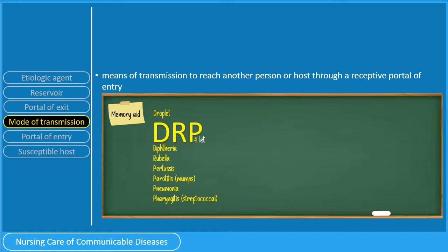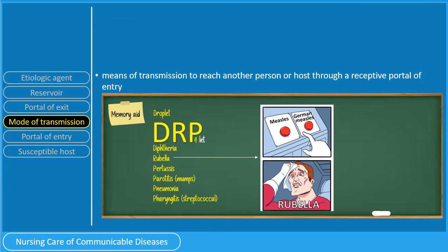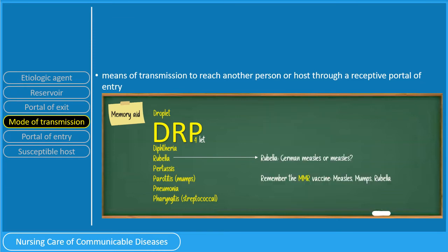Sometimes we get confused about rubella — is it measles or German measles? Just remember the MMR vaccine, which stands for measles, mumps, and rubella. By logic, rubella cannot be measles because that would make MMR stand for measles, mumps, measles. So rubella is German measles.